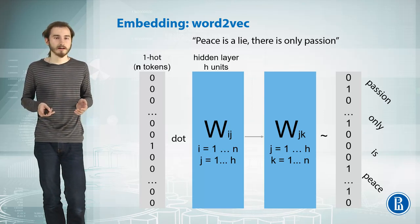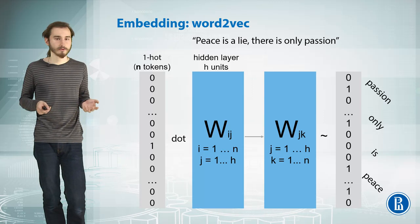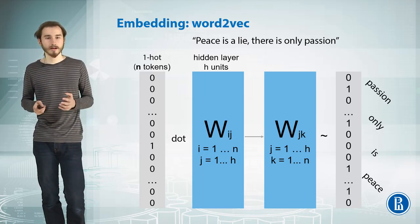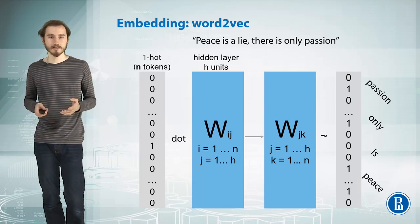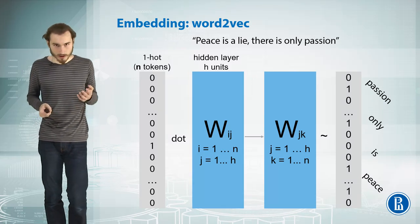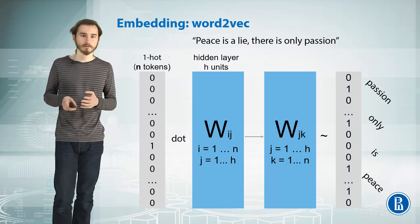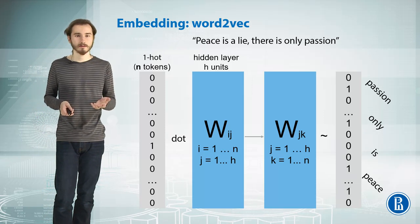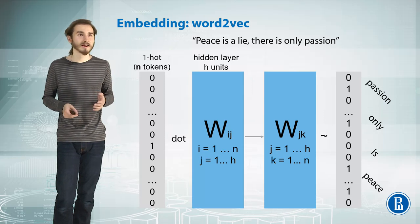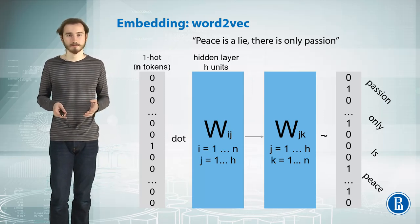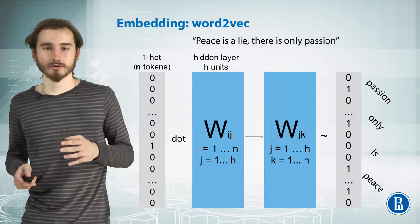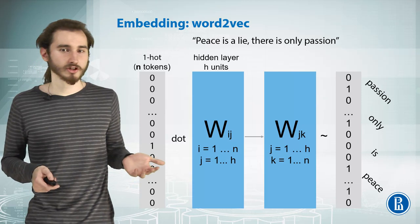You train this model by taking samples from the dataset - just sentences - then picking one word from the sentence and using it as the input, the middle word. All other words in the sentence are considered the target reference answers, and the model tries to predict them. Once it converges, you can count on this first matrix being the word representation you actually want.